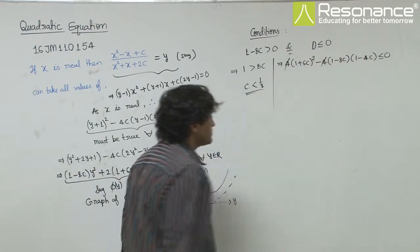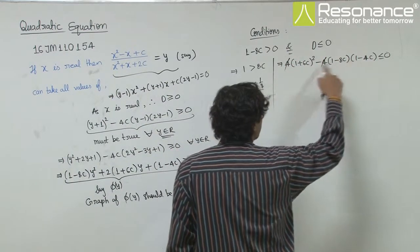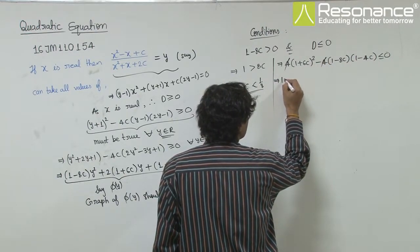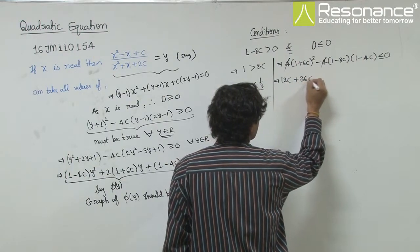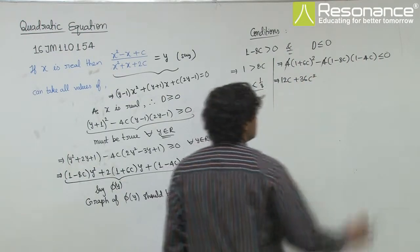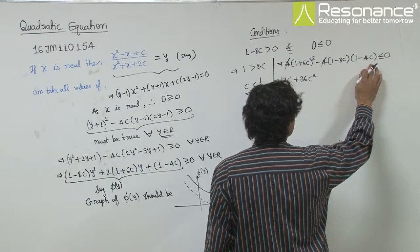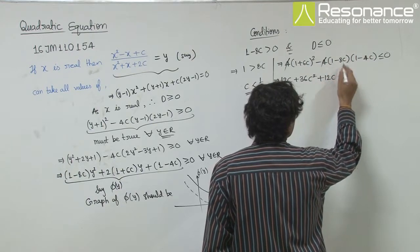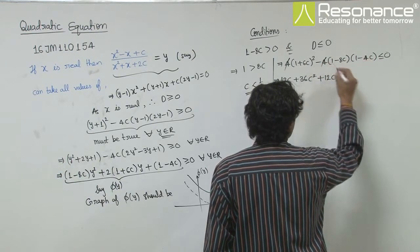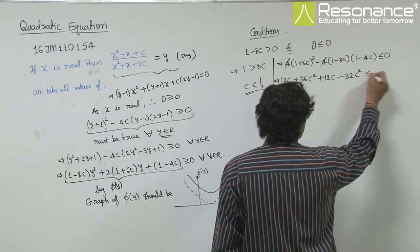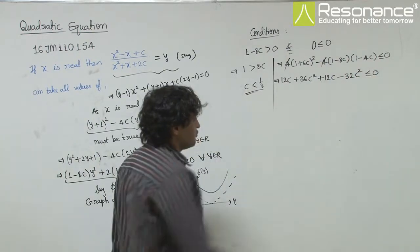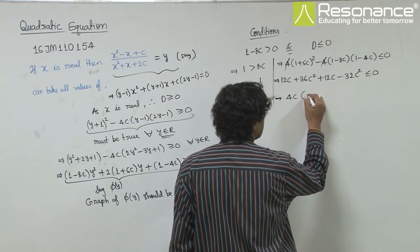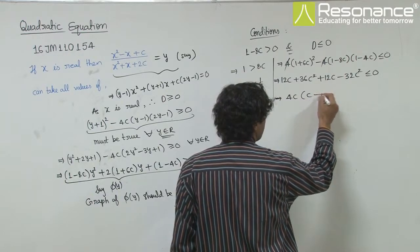So, 4 is cancelled out, and the 1s will cancel. This is 12c plus 36c square. This is minus 8c minus 4c, so minus 12c plus 12c cancel, and this is plus 32c square, so 4c square less than equal to 0. So, 4c square or 24c? If I take 4c common, this is c plus 6.